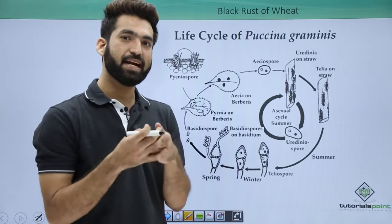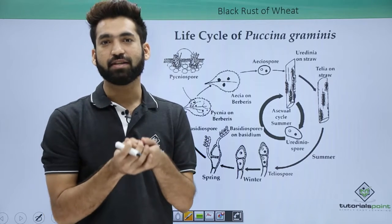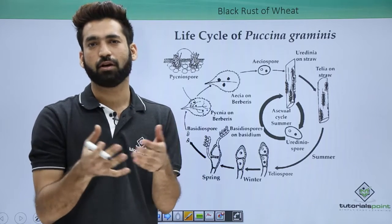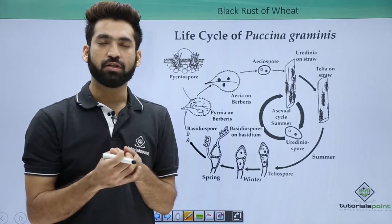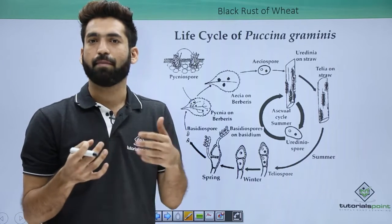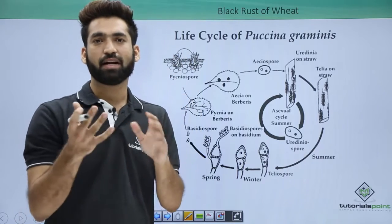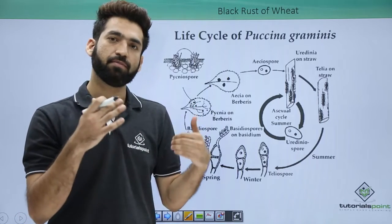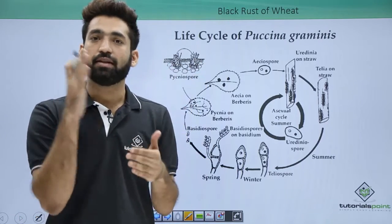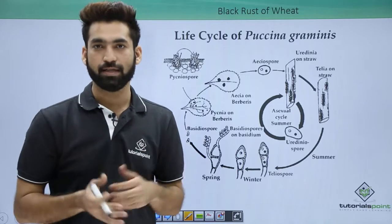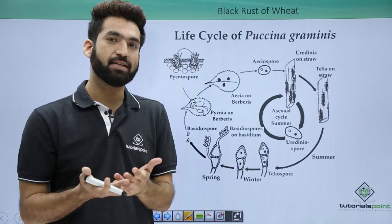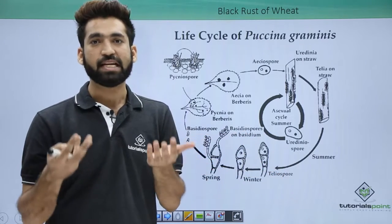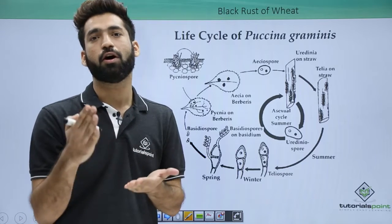Puccinia infects wheat, and in India we grow wheat by sowing seeds in the month of November. The wheat starts growing in December or early January, and it grows from December to March. At the end of March or the first week of April we harvest the wheat. So when Puccinia is a parasite on wheat, the only favorable condition it gets from wheat is from December to late March or early April.